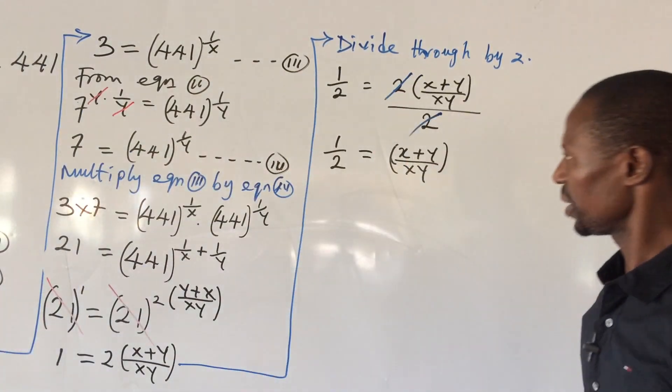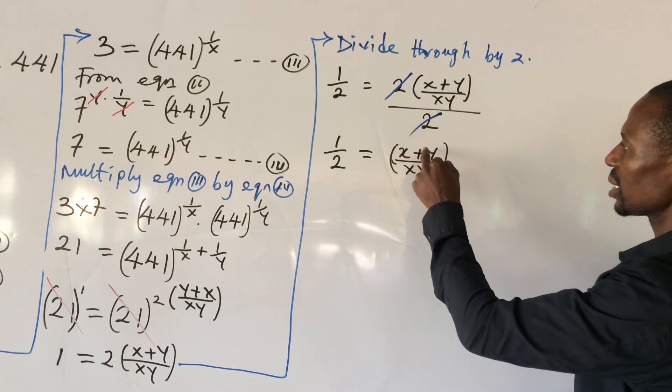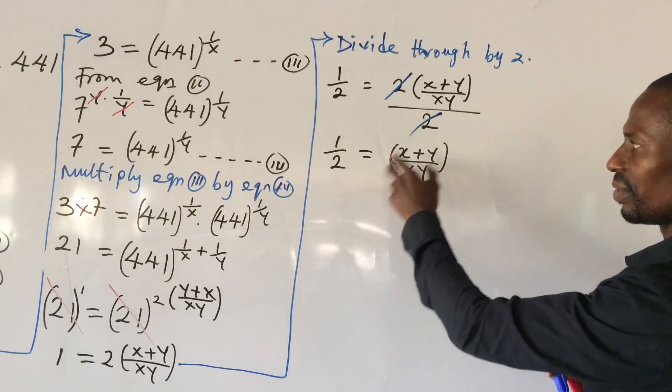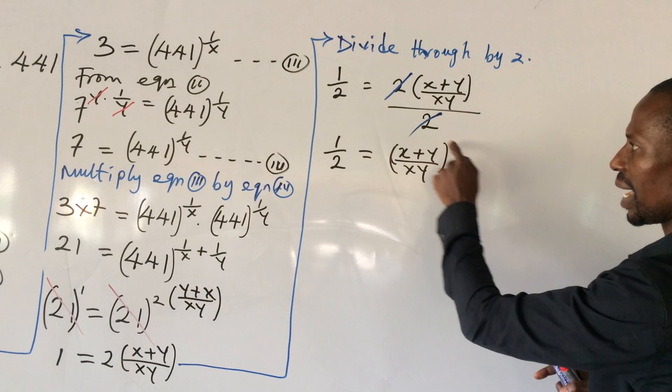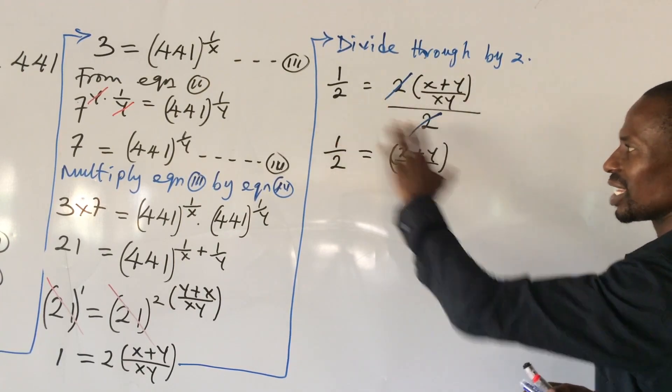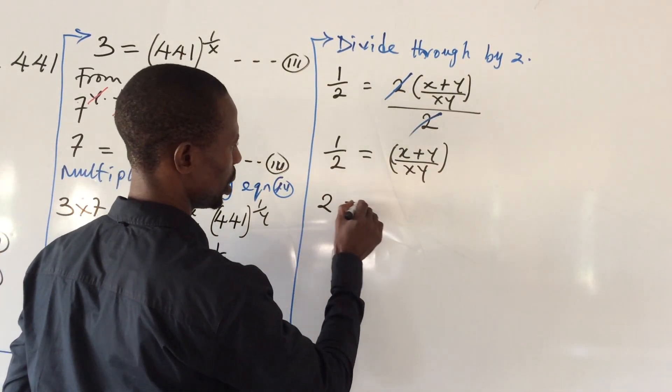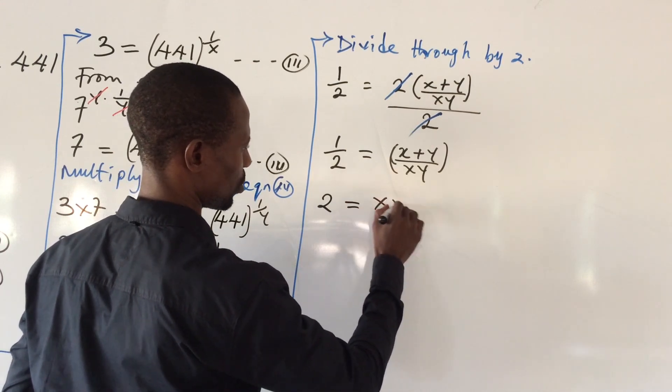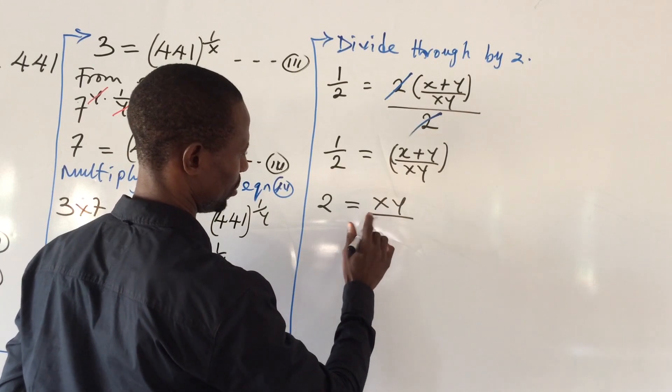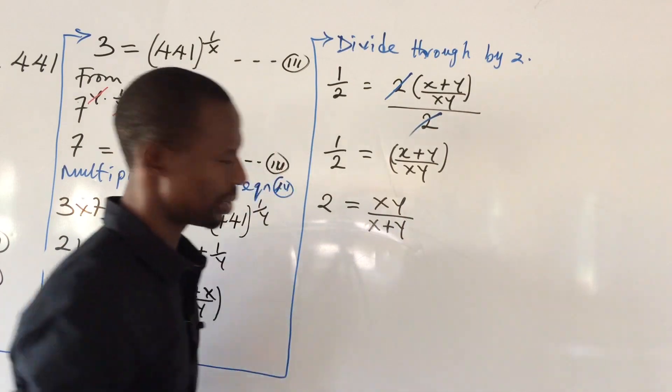Now if we look at our question very well, we are asked to look for xy all over x plus y. So what we do here is to find the reciprocal of this, or we cross-multiply then divide by 2 again. So if we find the inverse of both expressions, this will automatically give us 2 equal to your xy all over your x plus y.